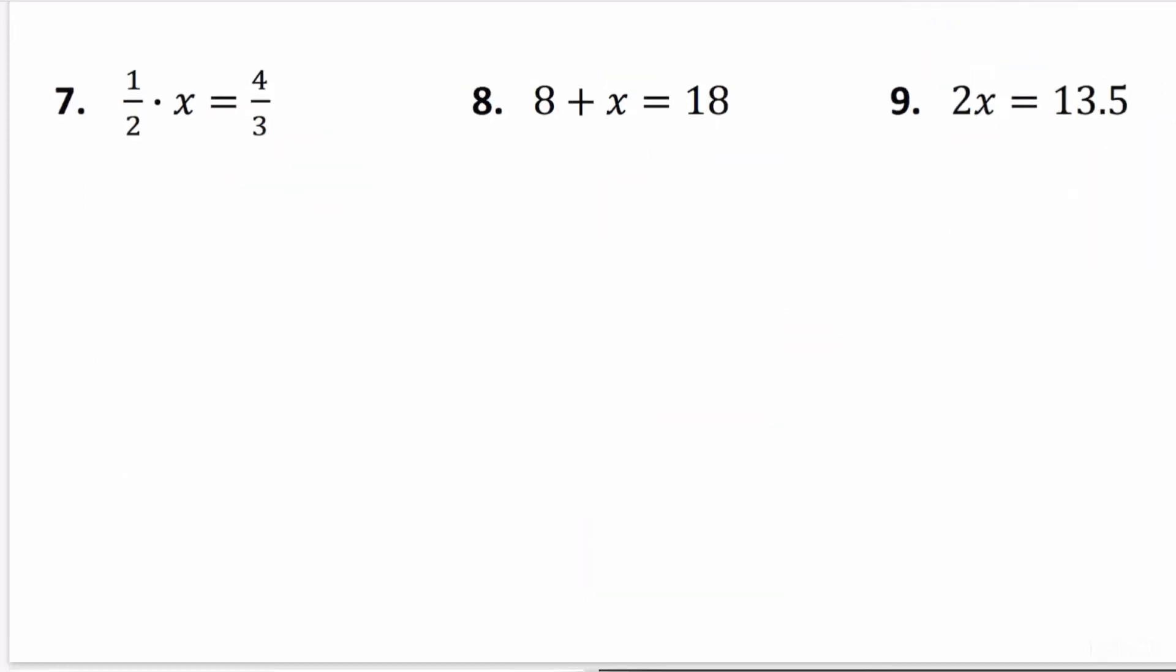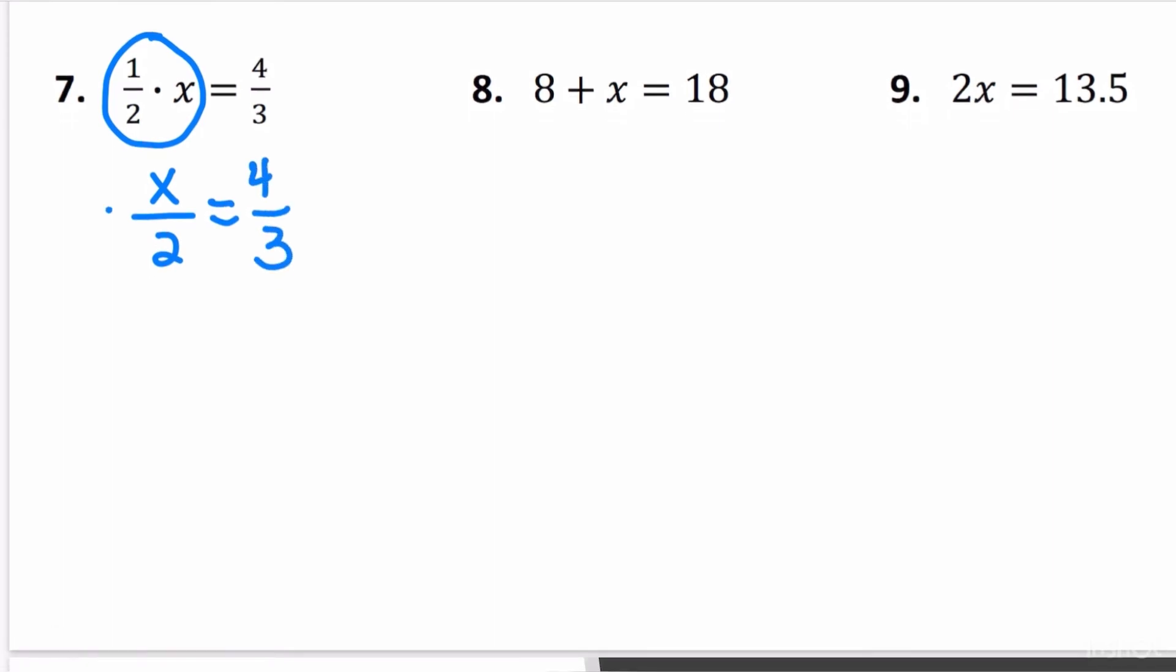Number 7. 1 half x equals 4 thirds. More fractions. We have choices. One of the things that we can do is rewrite this left-hand side as x over 2 equals 4 thirds. Then you multiply by 2 on both sides. So that cancels it on the left. You get x is equal to—2 is the same as 2 over 1. When you multiply, you're going to get 8 over 3. So the answer is 8 thirds.